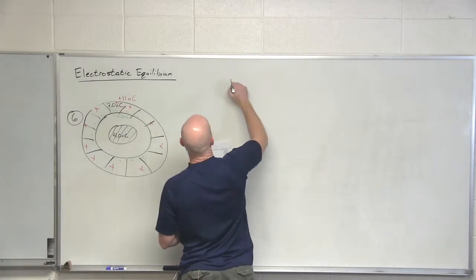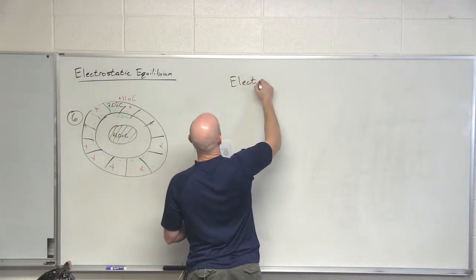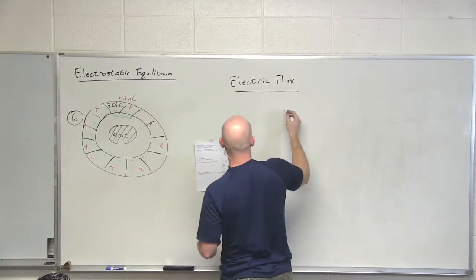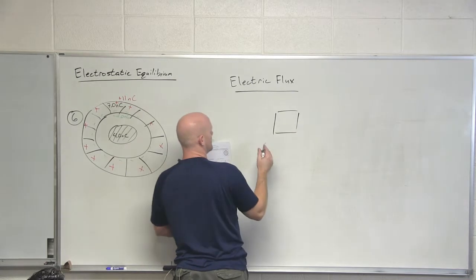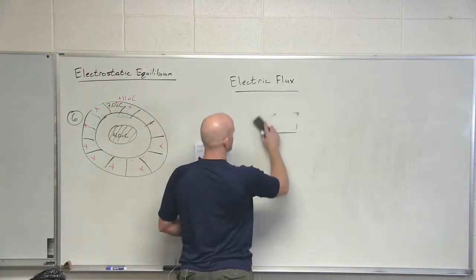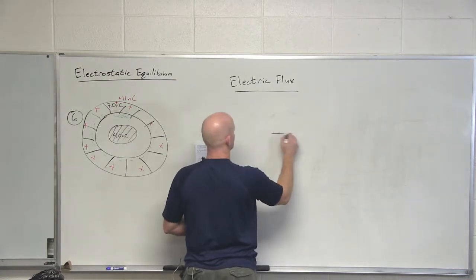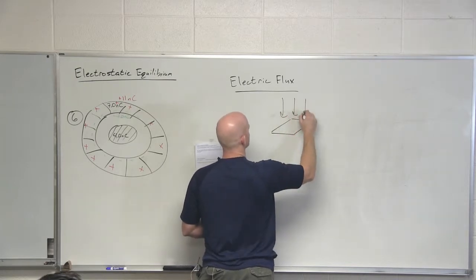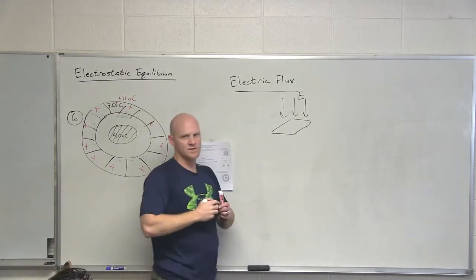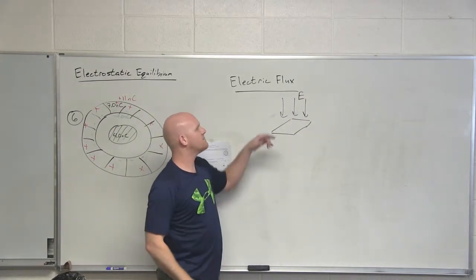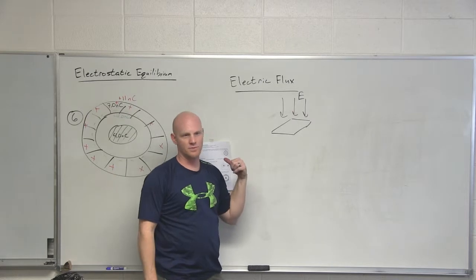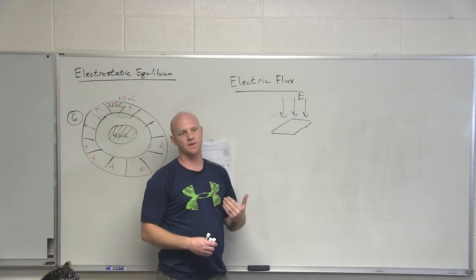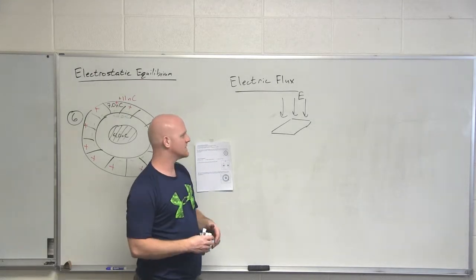I just want to identify first what's called electric flux before we get proper into Gauss's Law. Electric flux just says if you've got some surface and you have electric field lines passing through that surface, the electric flux is some measure of the electric field lines passing through there. The greater the concentration of field lines passing through it, the greater the electric flux.